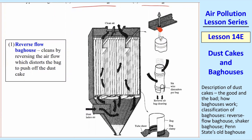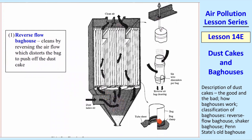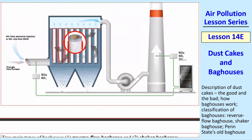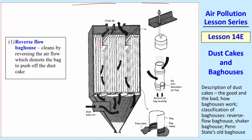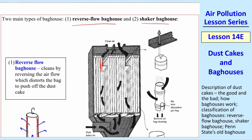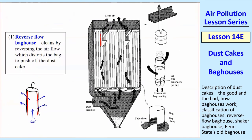A reverse flow bag house cleans by reversing the airflow, and that distorts the bag to push the dust cake off. In this schematic, these bags are hanging from the top. This is the kind where the air comes into the inside of the bag — the air comes in, goes through the inside of the bag, and then the clean air comes out and is collected at the top. So whereas in that case the dust cake builds up on the outside of the bag, in this case the dust cakes build up on the insides of the bags — very similar to the bag on your vacuum cleaner at home. Air comes into the middle of the bag and goes through it, so the dust cake buildup is on the inside of the bag. Those are just two different ways of creating a bag house: you can have dust collect on the outside or the inside of the bag.